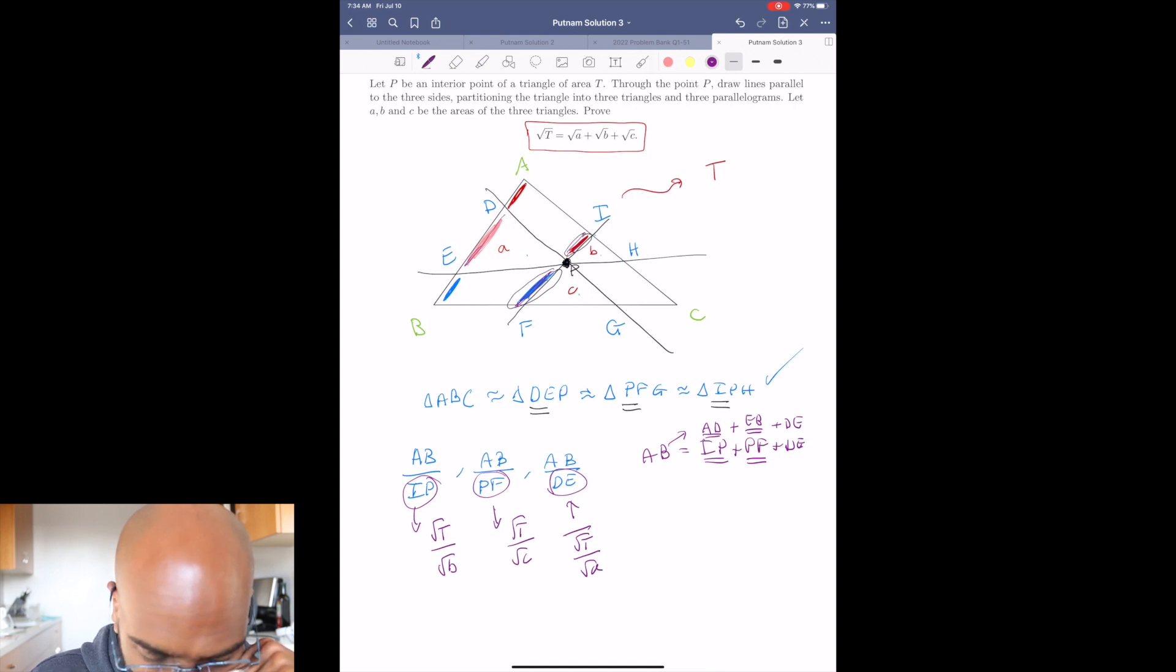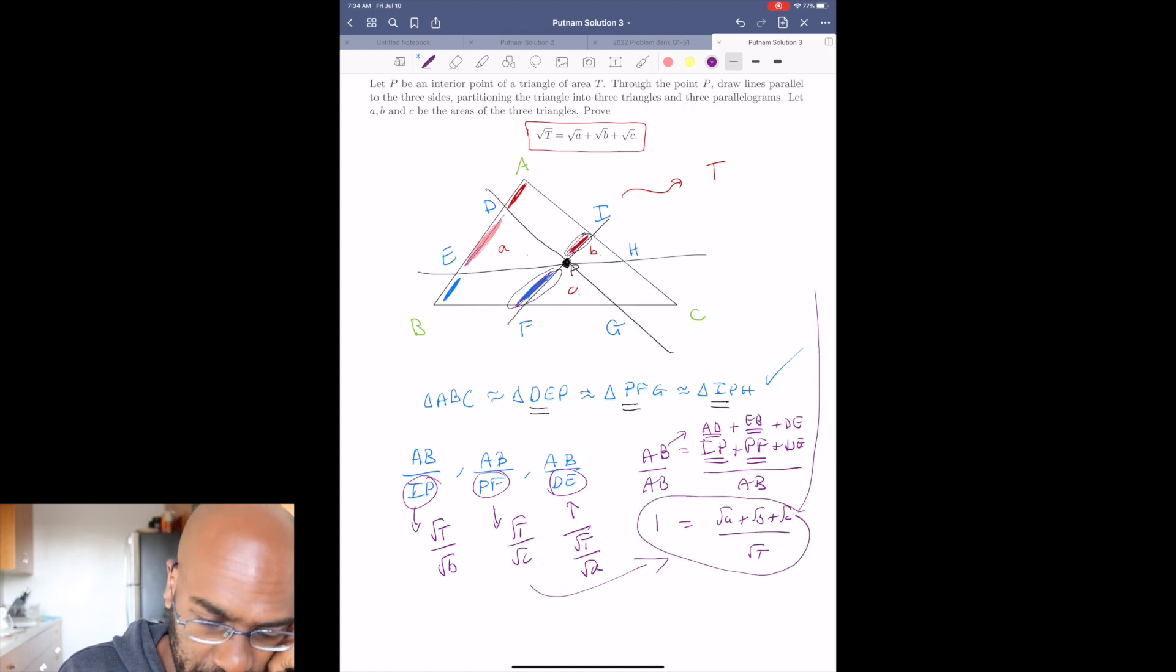So then that tells us something here. So if we divide by AB, there are a lot of ways to observe what I'm about to observe, but if you divide by AB, here on the left we get one, and on the right, by this information, we get the square root of A plus the square root of B plus the square root of C all over the square root of T. So indeed, the square root of T is the square root of A plus the square root of B plus the square root of C.